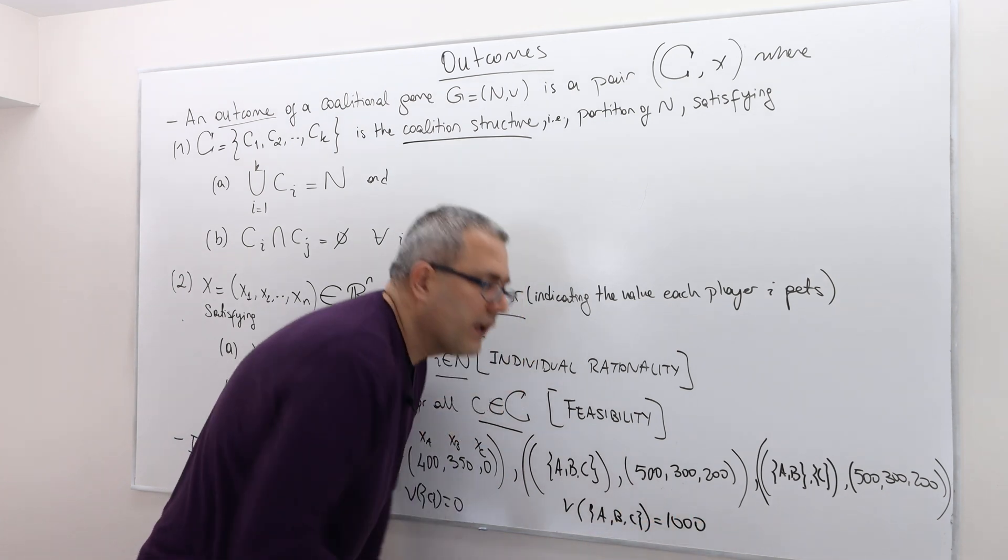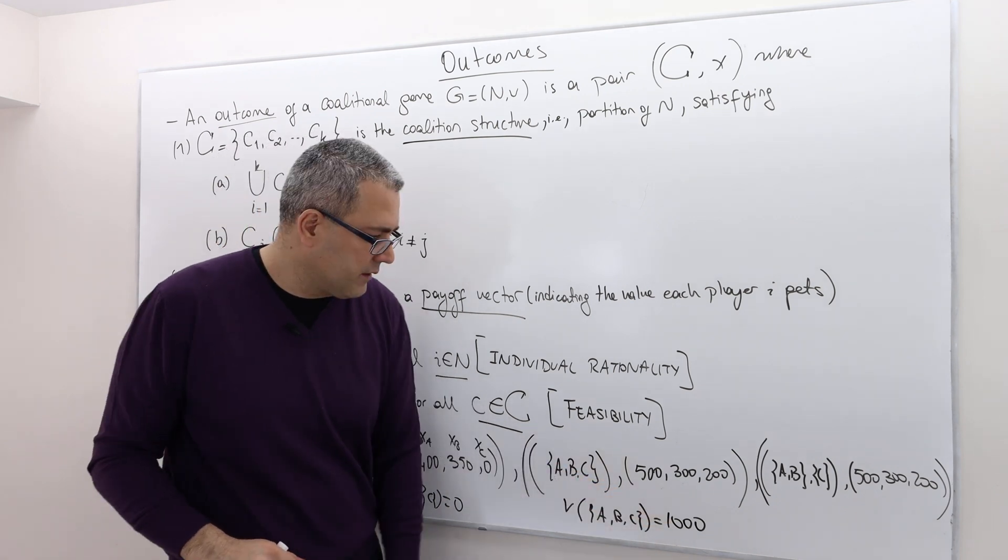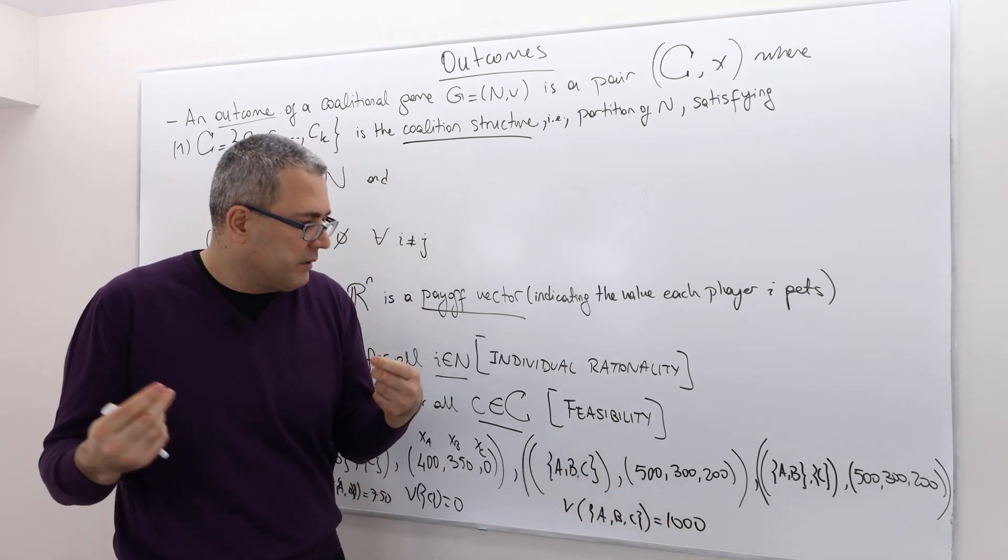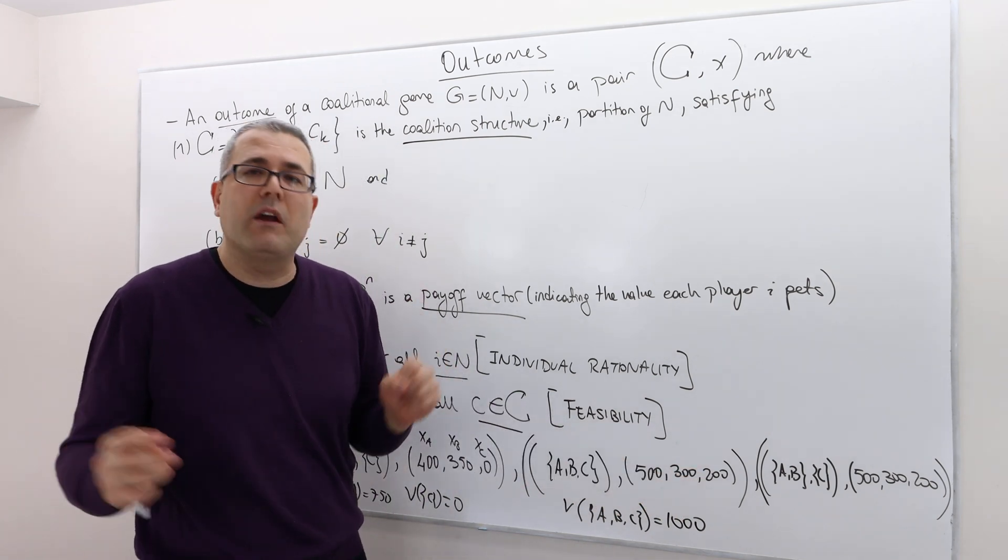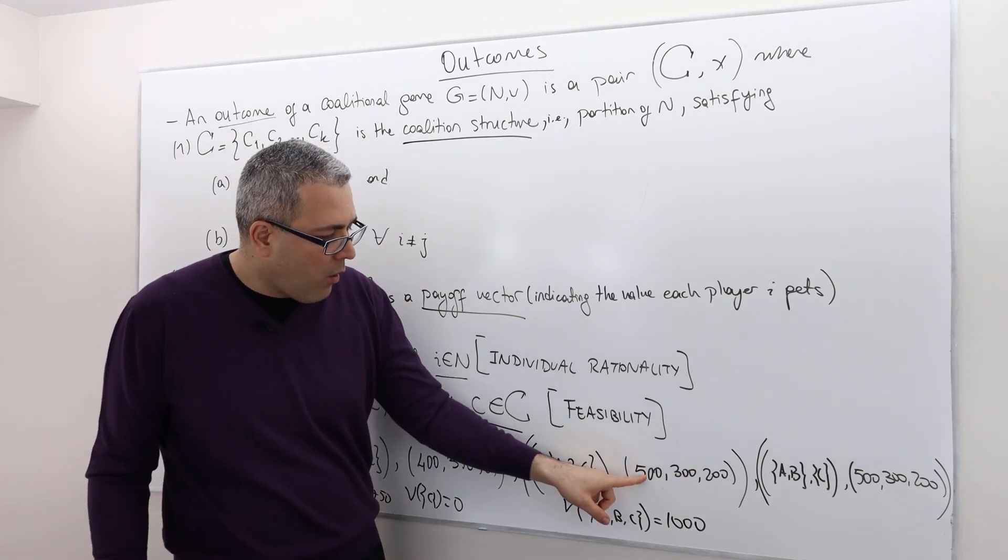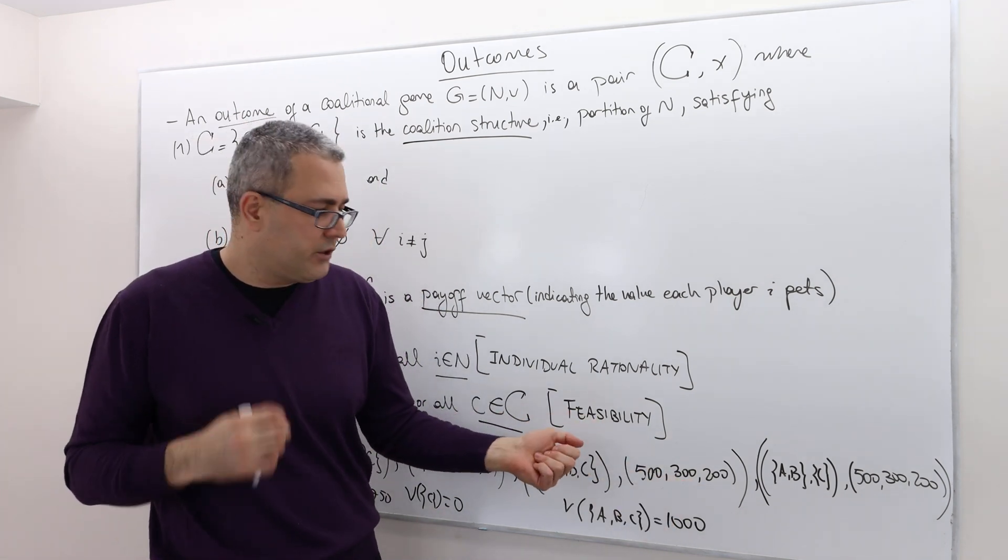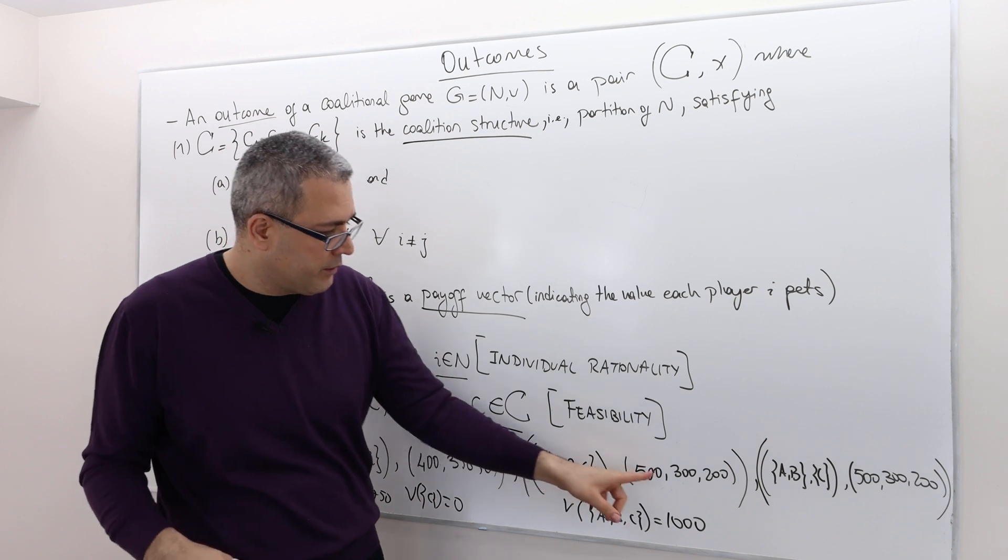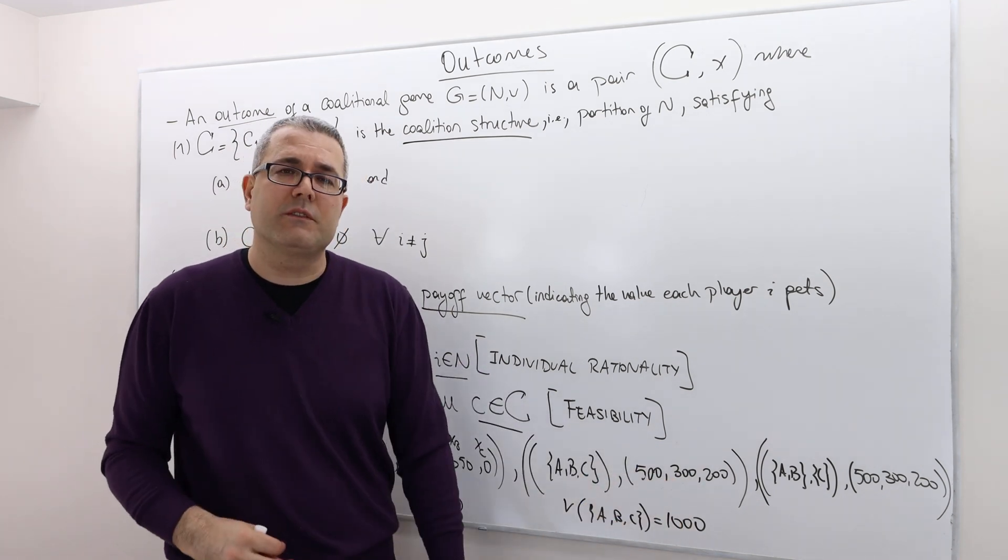And how do they split it? 500, 300, 200. That's the way they split it. Fine. All of them are greater than zero. So they are individually rational. And it's feasible, because when we add these numbers up, they add up to 1,000.